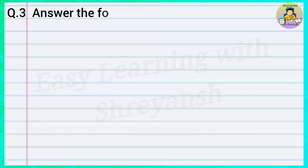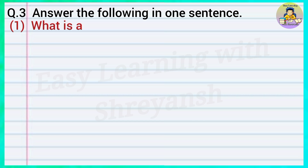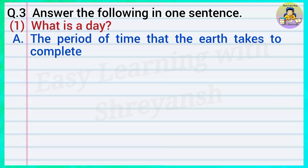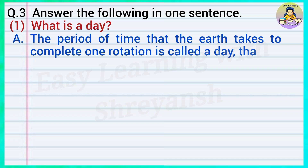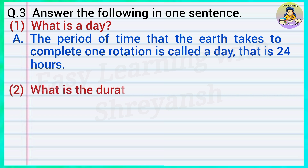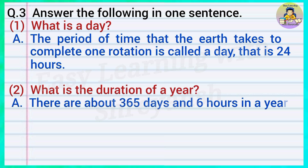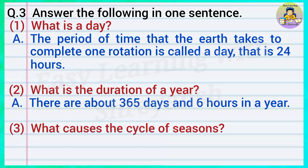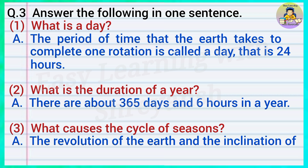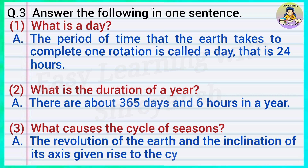Question number three: Answer the following in one sentence. One: What is a day? Answer: The period of time that the earth takes to complete one rotation is called a day, that is 24 hours. Two: What is the duration of a year? Answer: There are about 365 days and six hours in a year. Three: What causes the cycle of seasons? Answer: The revolution of the earth and the inclination of its axis give rise to the cycle of seasons.